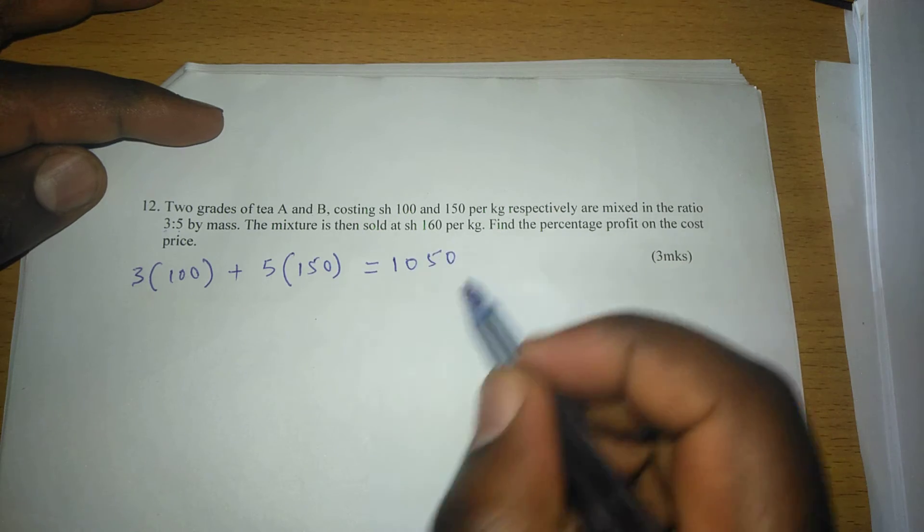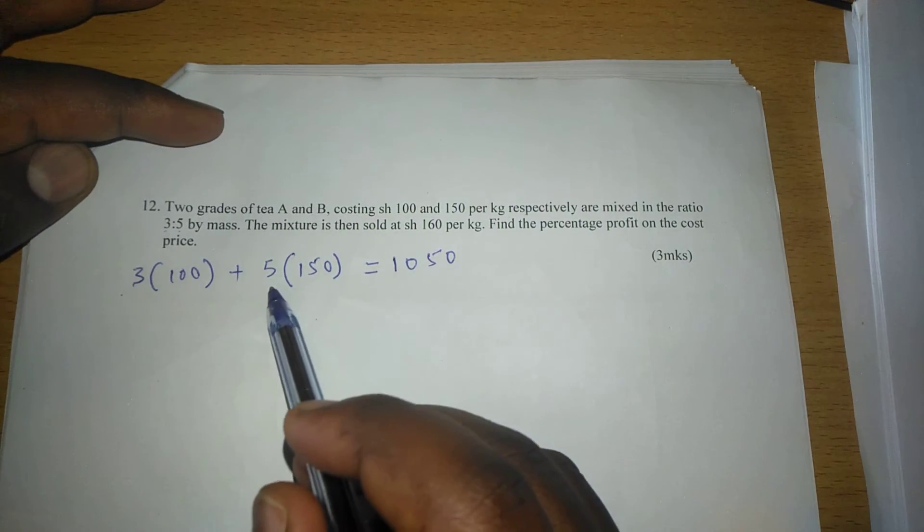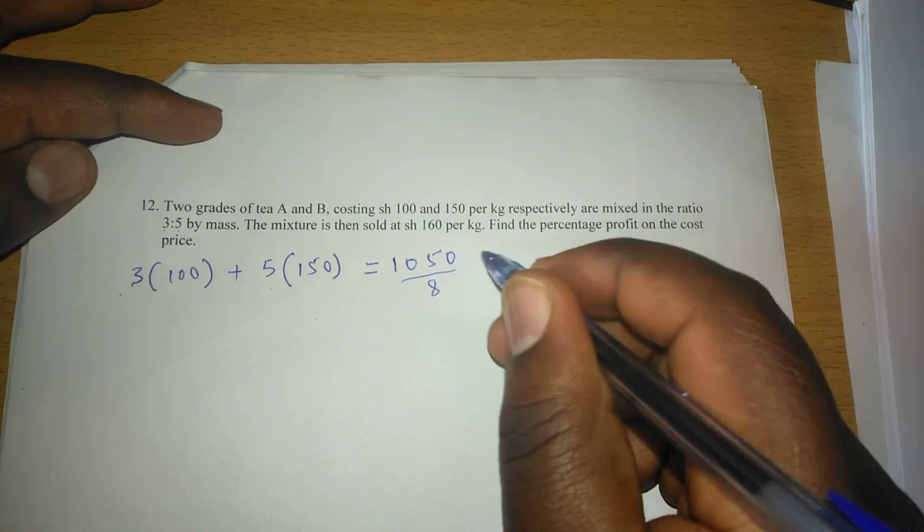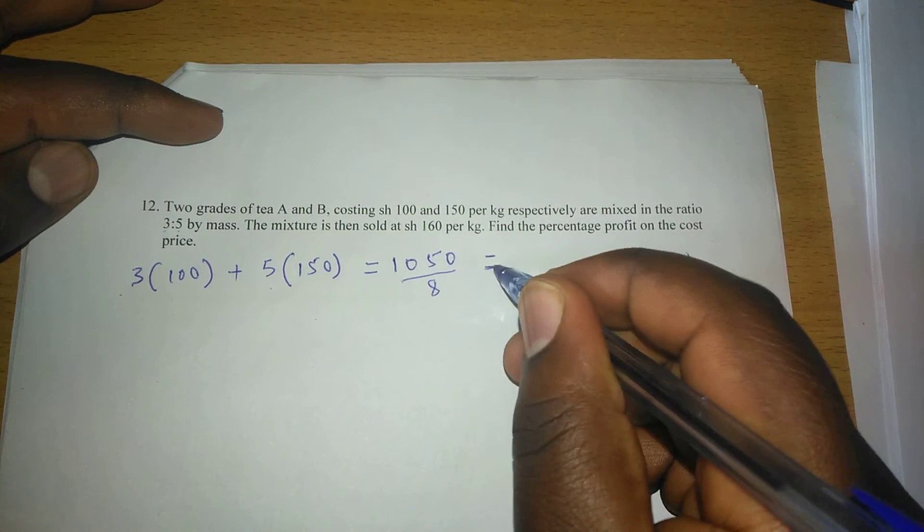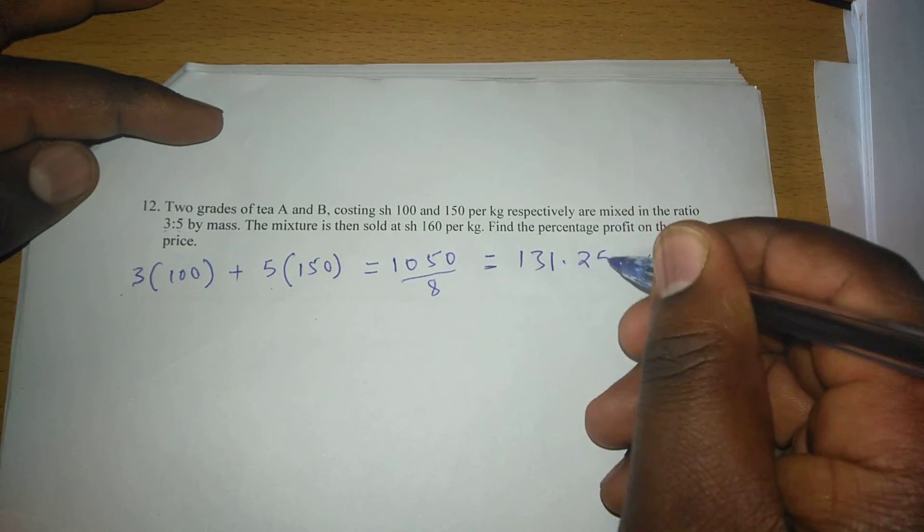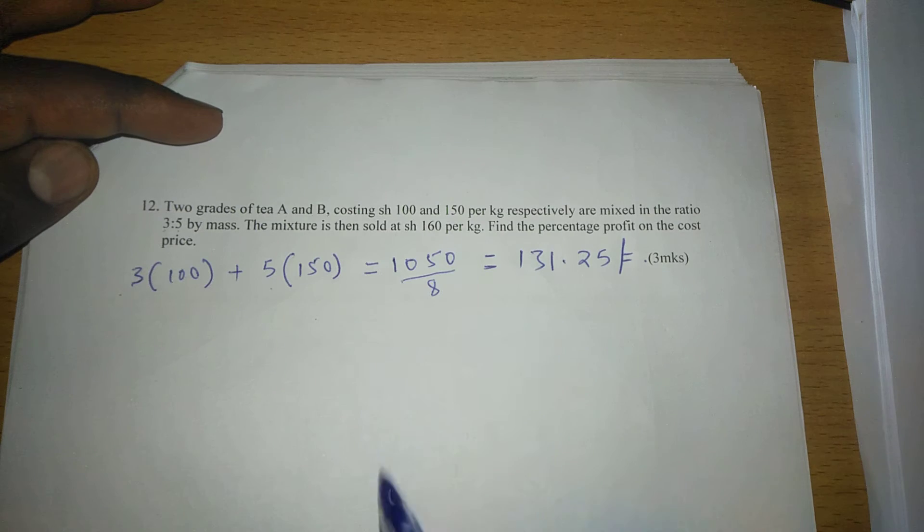And now this is the price of the eight kilograms mixed since we have three and five. So we can divide with eight to know a kilogram of this mixture has a cost of 131.25. So if a kilogram is costing 131.25.